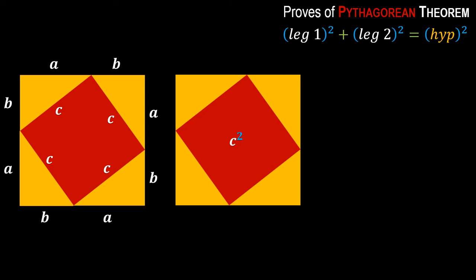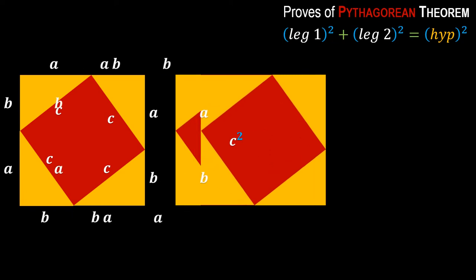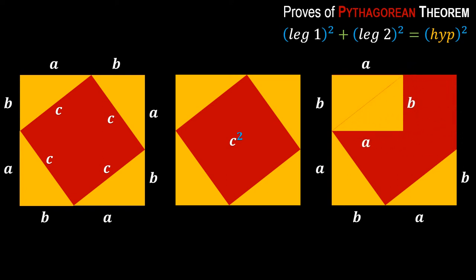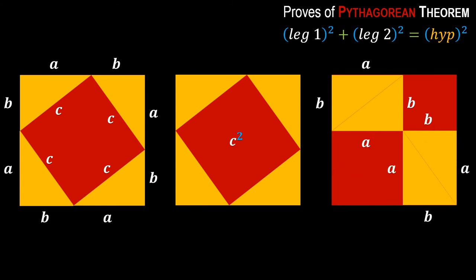Now I am taking another copy of this figure and rearranging the triangles — moving this triangle from here to there, and another one to a different position. The same four triangles are now arranged in a different form. You can see that the red region has split into two smaller regions, but the total area is still the same, because the large outer square is the same and the four triangles are still the same.